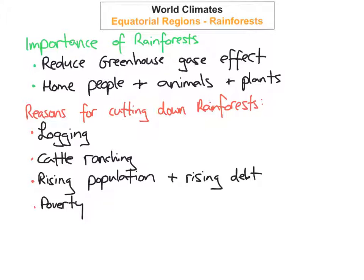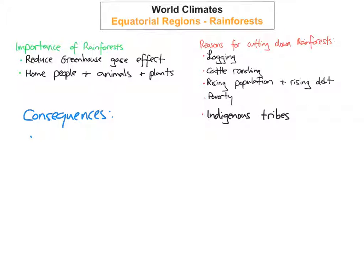The next reason is indigenous tribes. These are tribal people who actually live within the rainforest, and many of these tribes use a slash-and-burn technique to clear away the rainforest. An area of forest is cleared and planted with crops, then after harvesting they move on to another patch and the process repeats. Because there are so many indigenous tribes living in the rainforest, a large amount of it is getting destroyed through this technique.